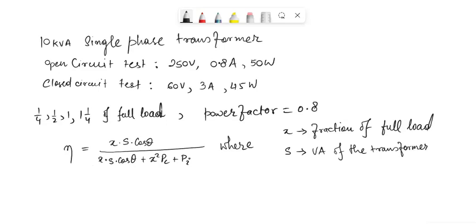It is in kVA units, and pc is the copper loss and pi is the iron loss.